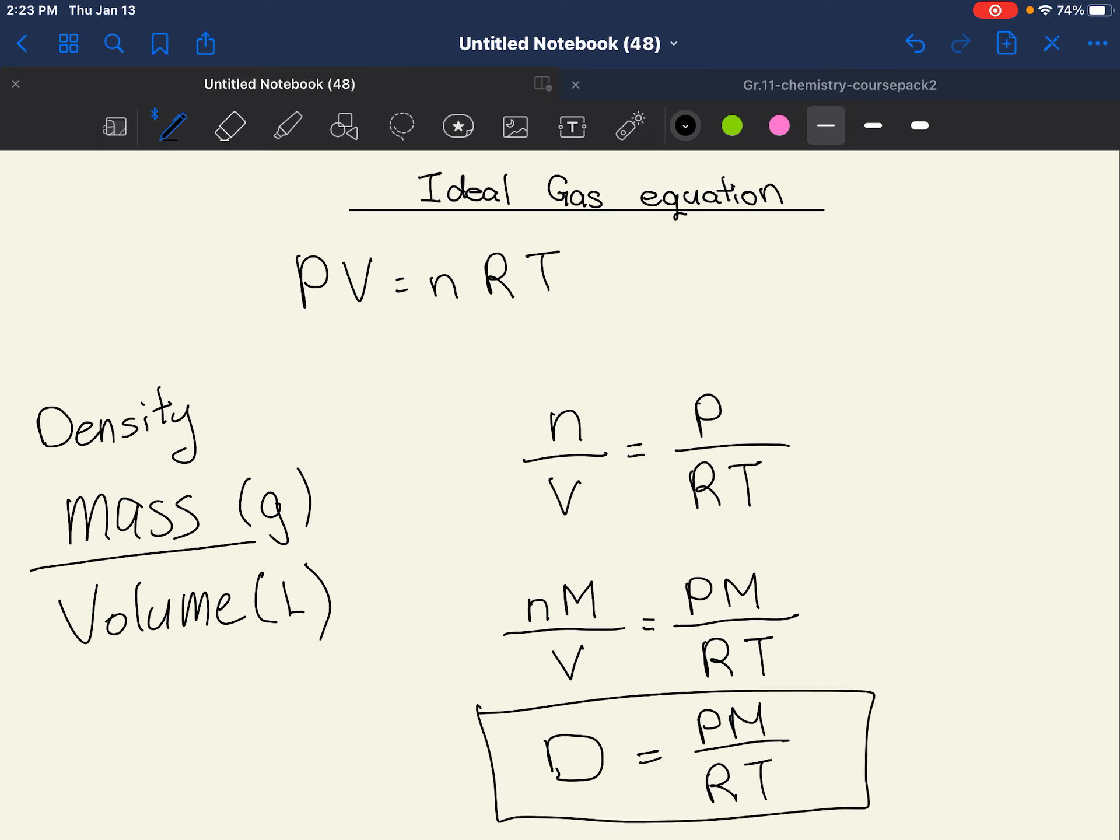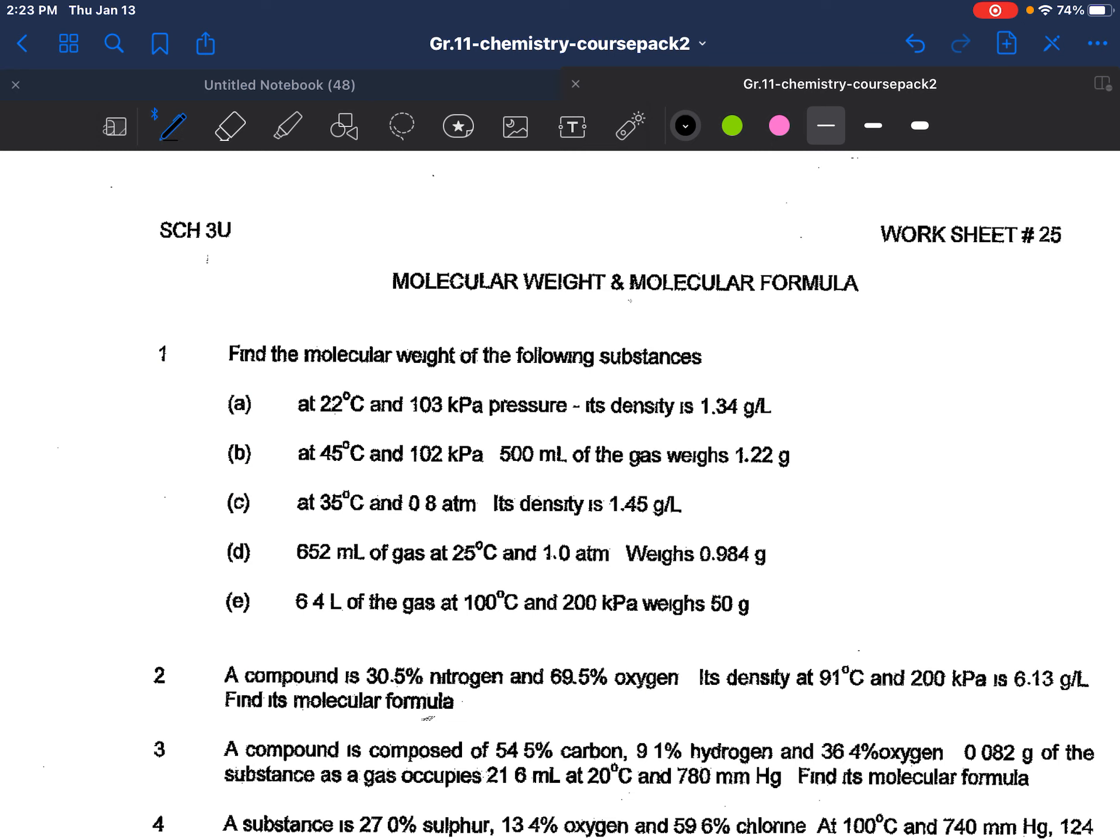Wow, look at that. Looking so nice. So the density here is equal to PM over RT. M, of course, being the molar mass of your ideal gas. Hey, let's do some questions. I have some questions. Very nice questions too. Yeah, let's do this one.